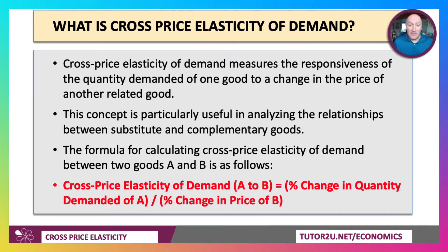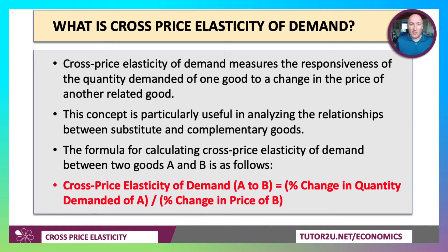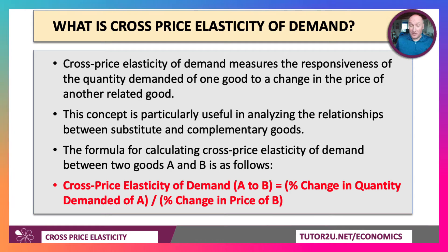Cross-price elasticity is the responsiveness of demand for one product in relation to a change in the price of a related product. It could be a substitute, it could be a complement. The formula is the percentage change in the demand for good A divided by the percentage change in the price of good B, where good B is in some sense related to good A.